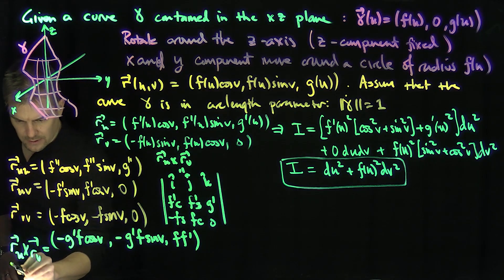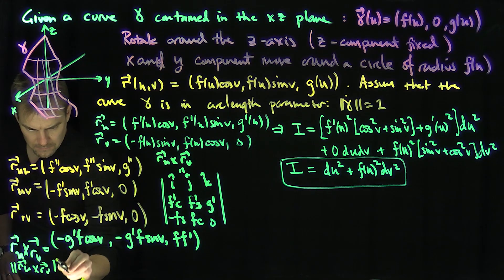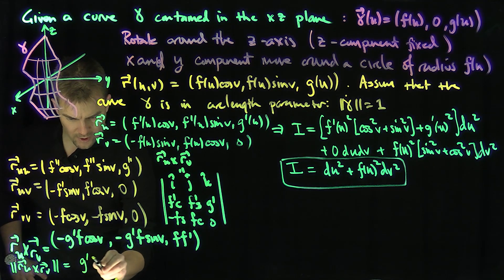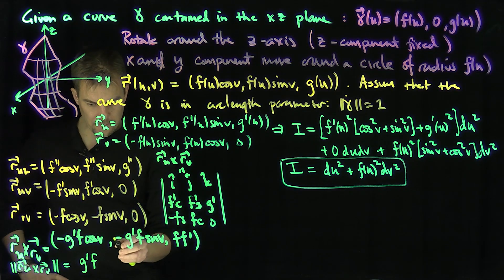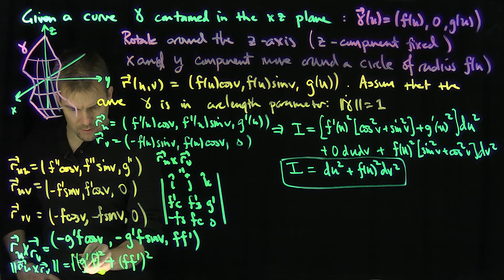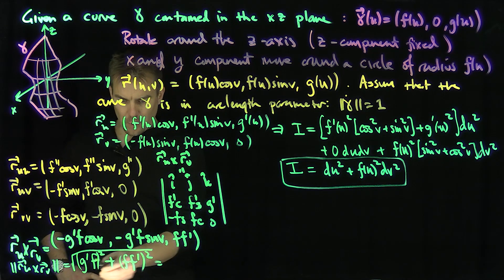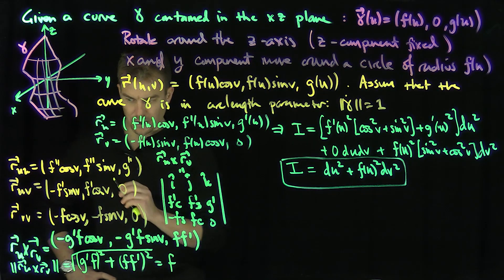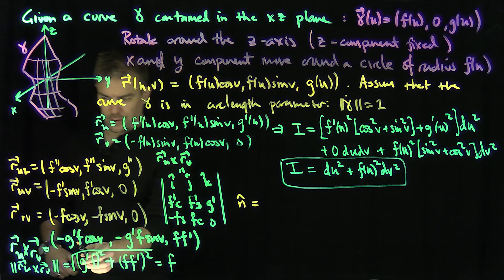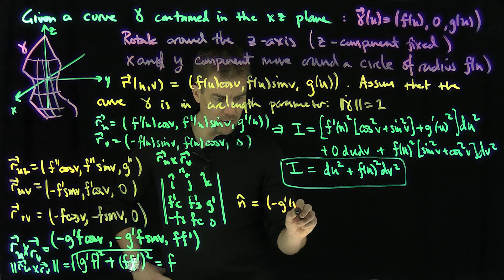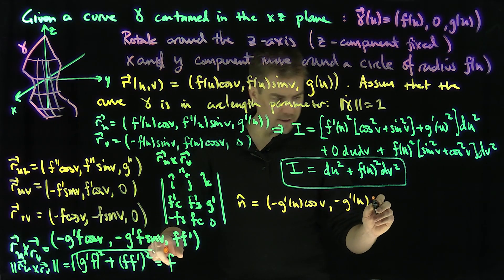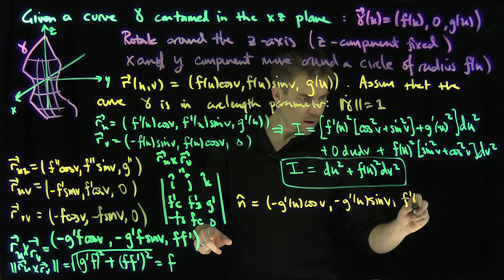The length of this vector is √(g'²f²(cos²v + sin²v) + f²f'²) = √(f²(g'² + f'²)) = f, since f'² + g'² = 1. So our unit normal vector n̂ = (-g'(u)cos(v), -g'(u)sin(v), f'(u)).